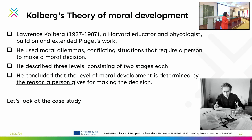A few words about moral development, otherwise you won't be able to understand the case study. Kohlberg's theory about moral development in children, teenagers, and adulthood described some moral dilemmas — conflicting situations that require a person to make a moral decision. He described three levels of moral development, each consisting of two stages. He concluded that the level of moral development is determined by the reason a person gives for their decision — it's not the decision itself but the moral reasoning behind it. That's why I will ask you to justify every choice you are going to make.